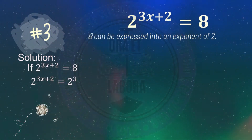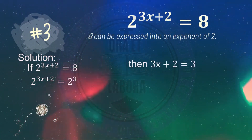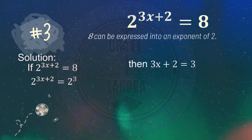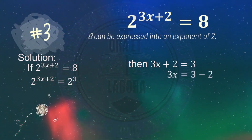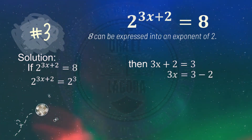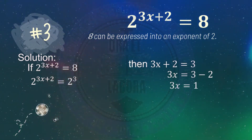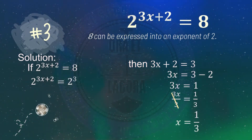Since both sides now share the same base of 2, we can proceed to solving x. Then 3x plus 2 equals 3. Transposing 2 to the other side gives 3x equals 3 minus 2, which is 1. So 3x equals 1. Dividing both sides by 3, x equals 1 third.